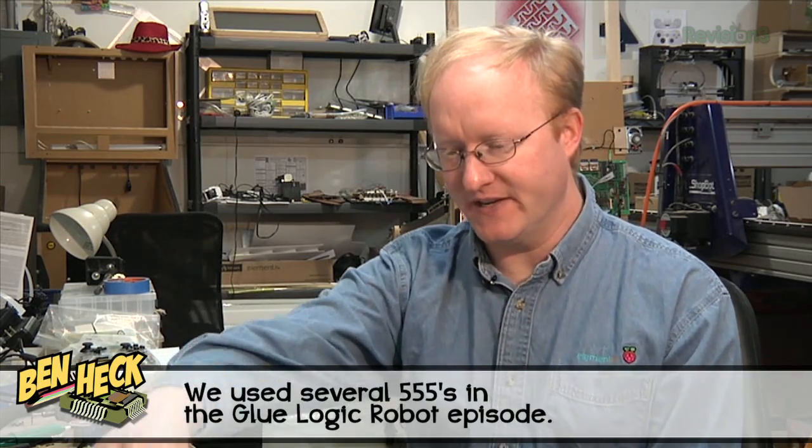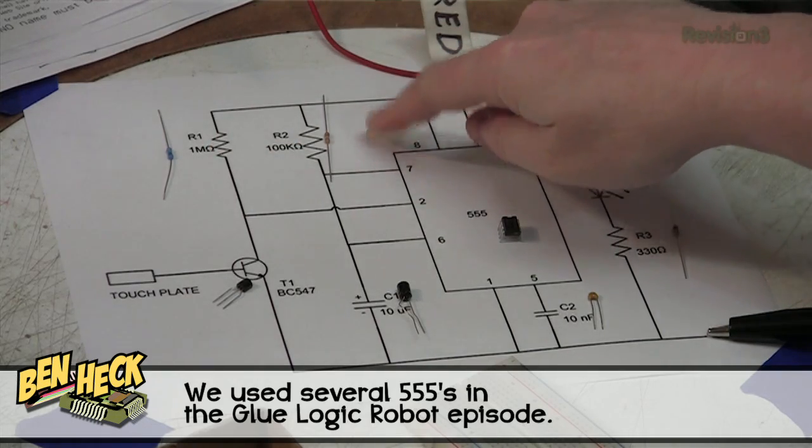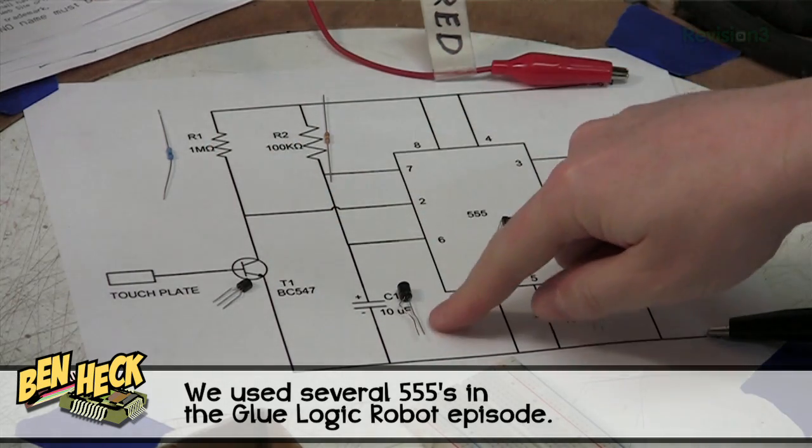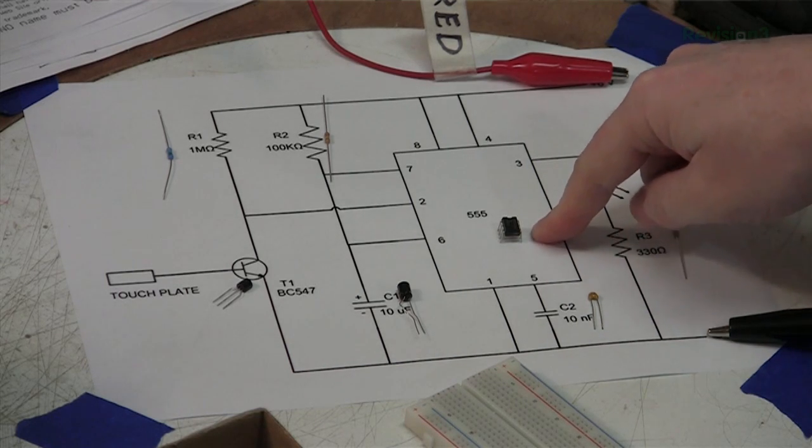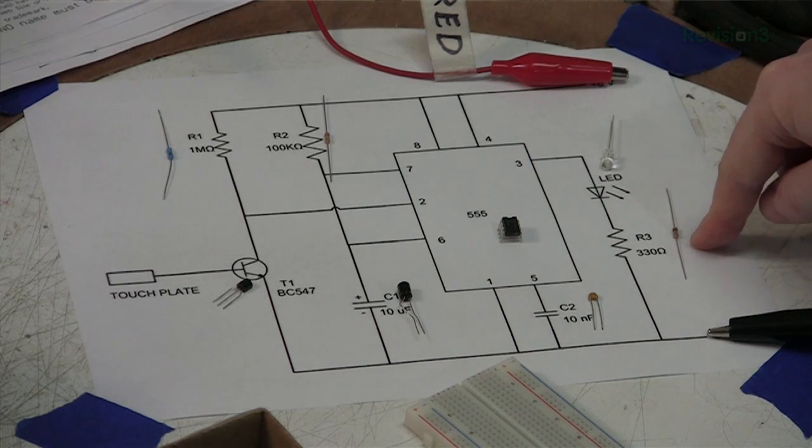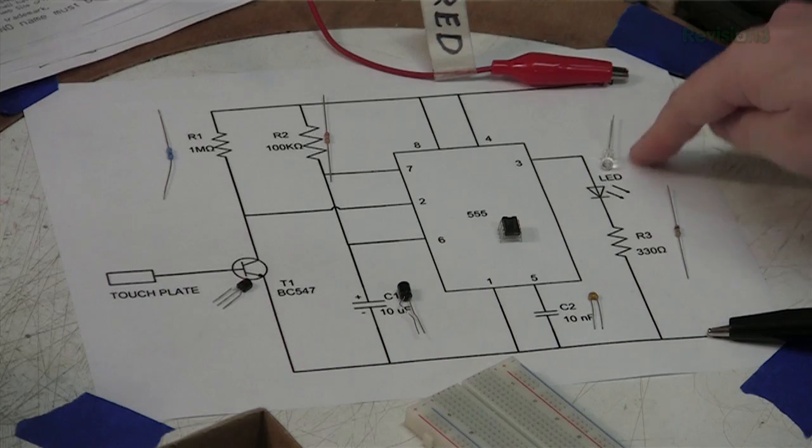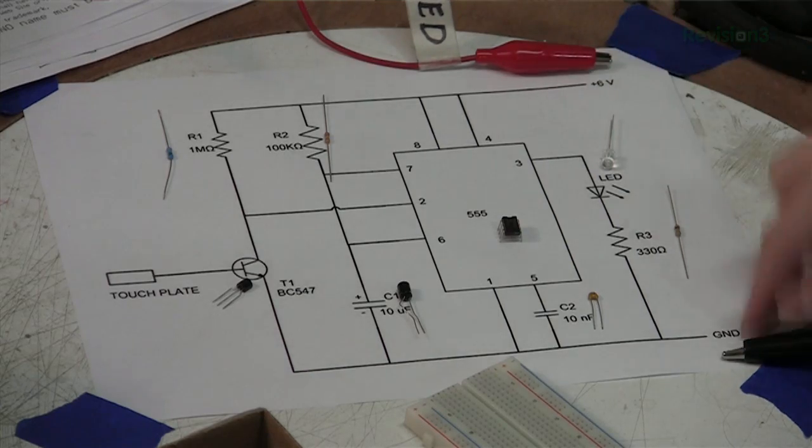Here are the parts we're going to need. A 1 mega ohm resistor, 100k ohm resistor, NPN transistor, 10 microfarad capacitor, 10 nanofarad capacitor, the 555 timer itself, 330 ohm resistor for the LED and the LED itself to indicate that it's on. For our power supply, we have our bench power supply here on the positive and negative side.